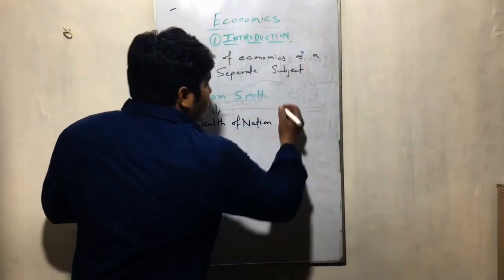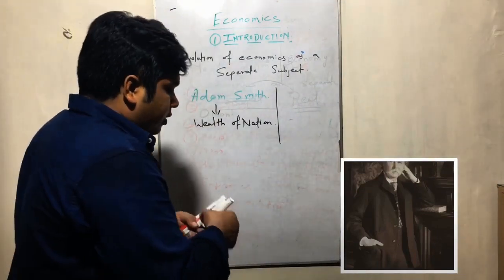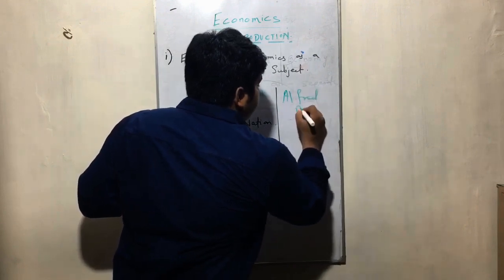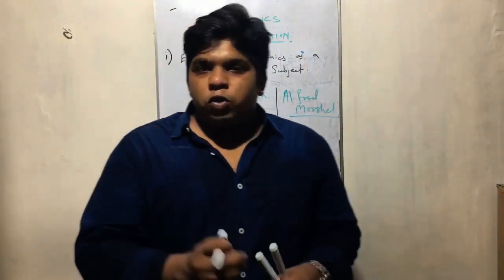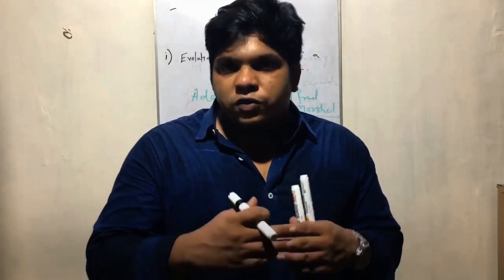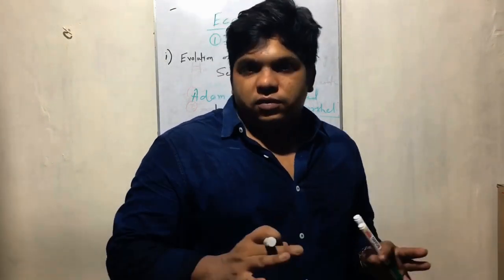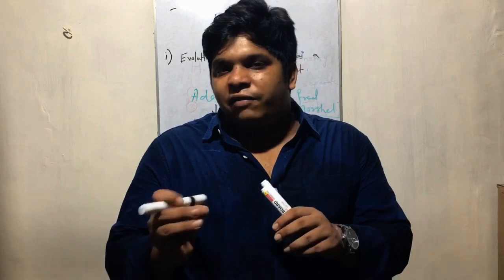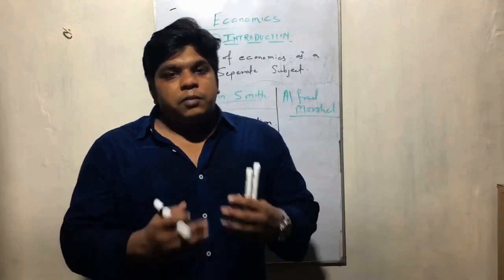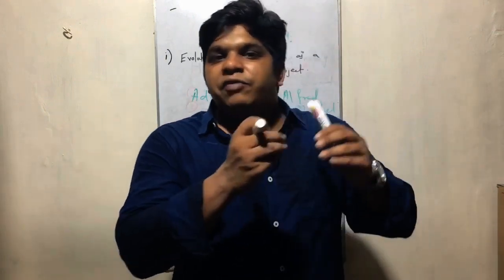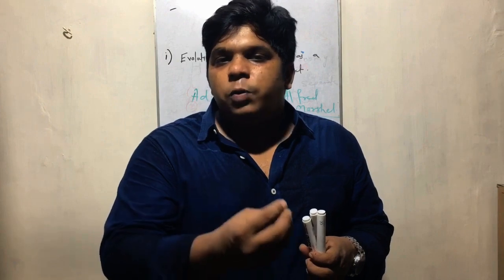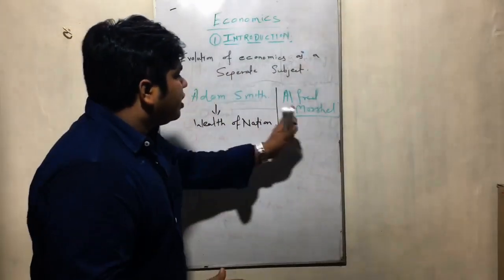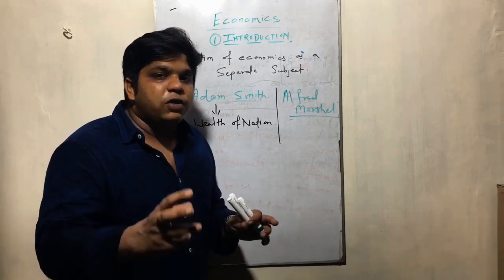Later on, Alfred Marshall stated that economics does not study only wealth generation but also studies the activities centering on wealth generation. This is a bit ahead of Adam Smith's definition but has a similar meaning. Activities concerning wealth generation — for example, transportation and the service sector — should also be taken into consideration. So these two thinkers have more or less the same meaning of economics, both concentrating on wealth generation.